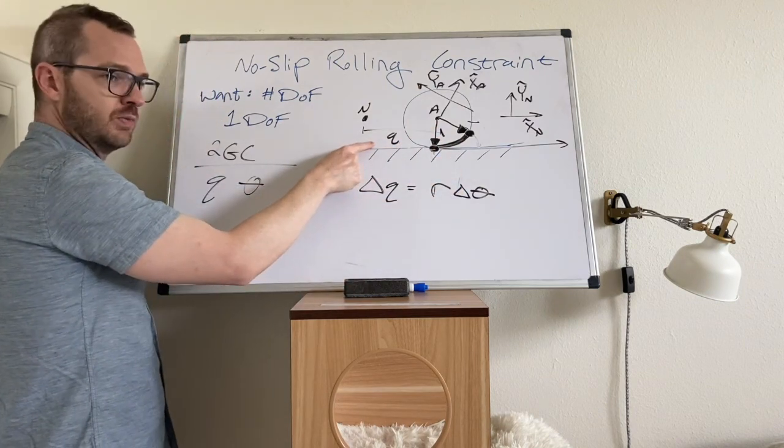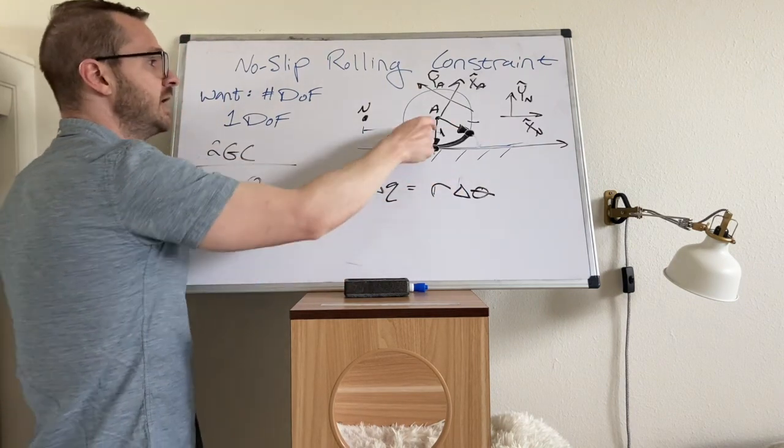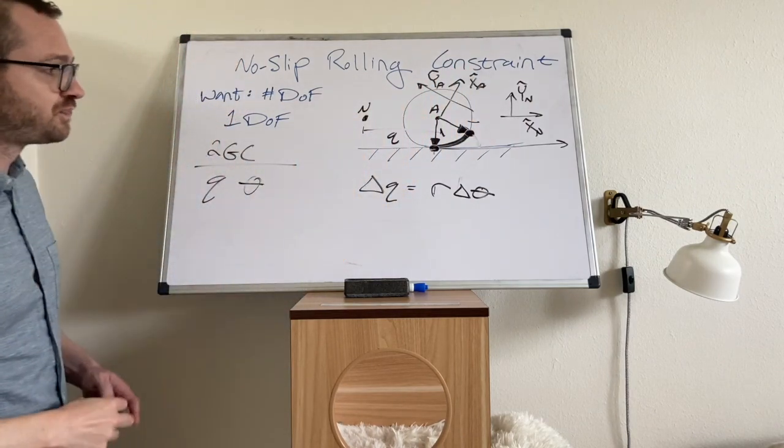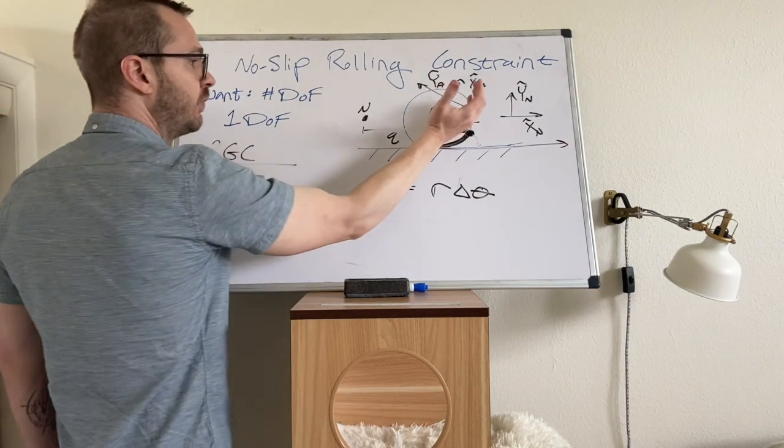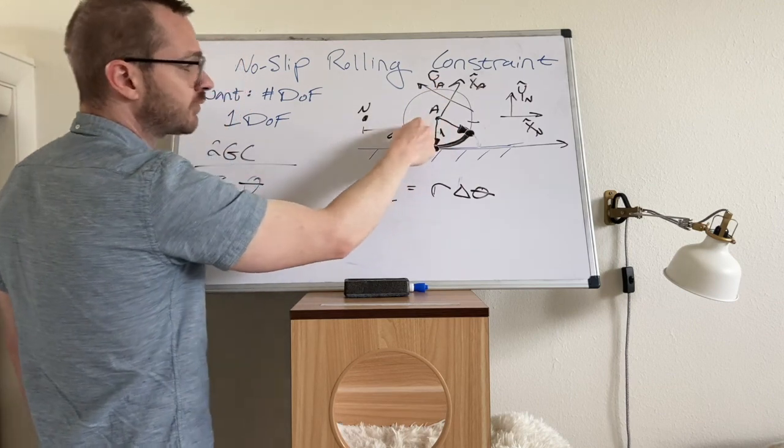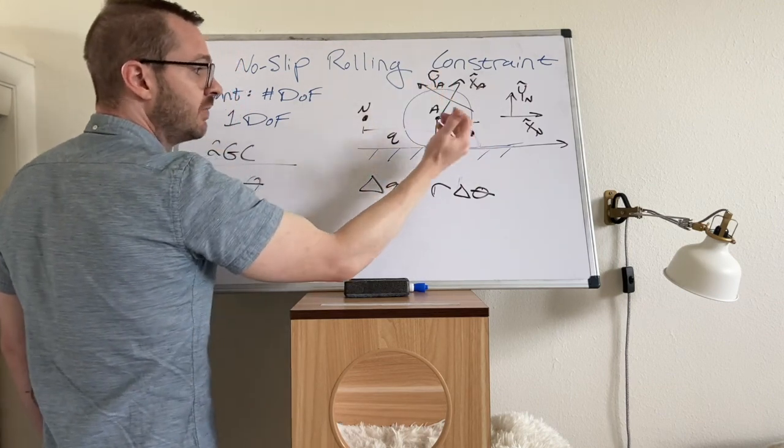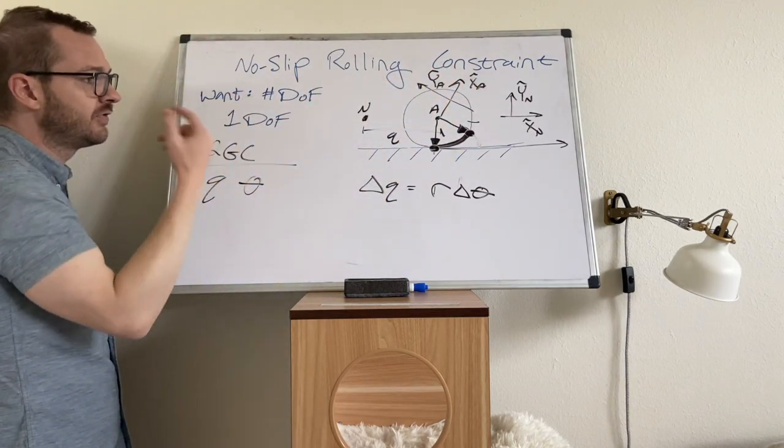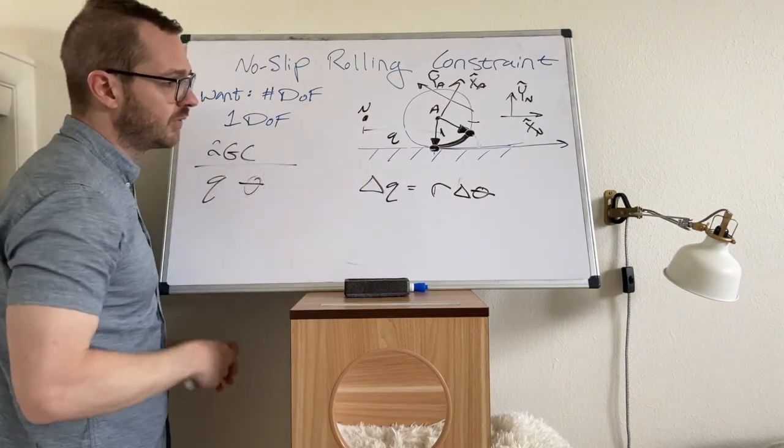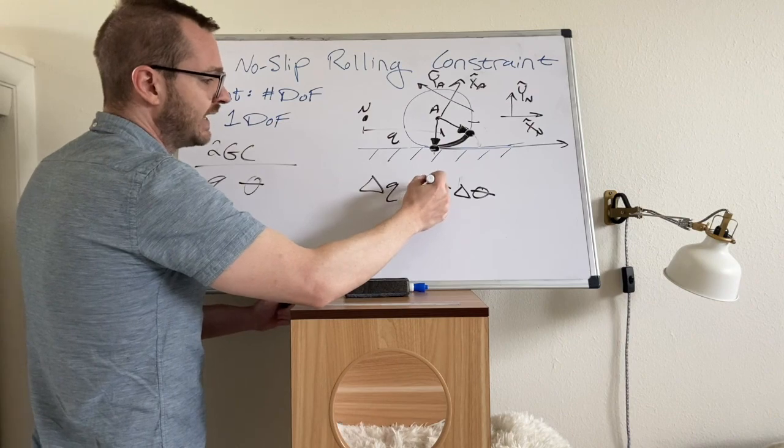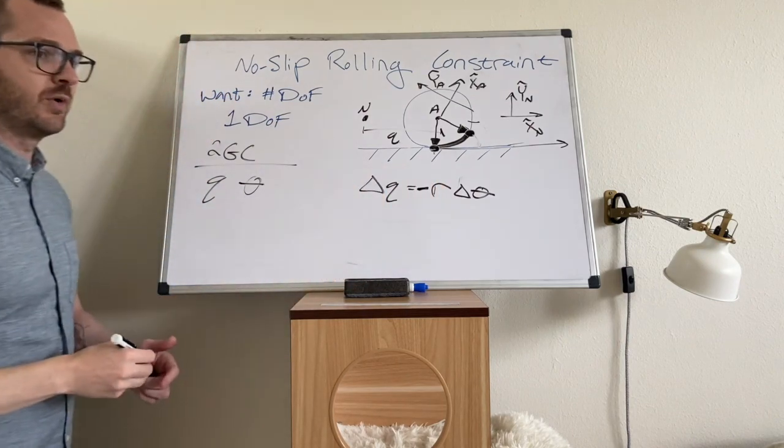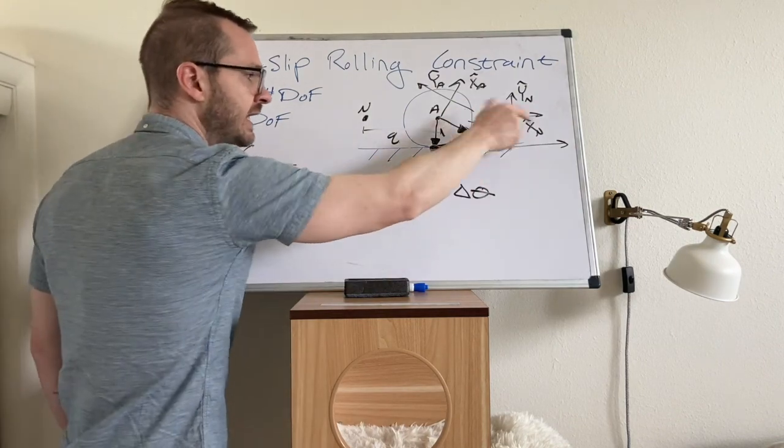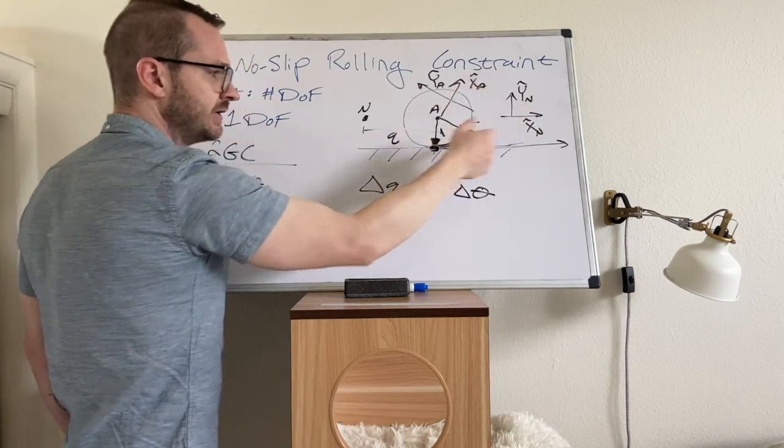Now, the way that we have defined q is that it's positive in the x hat N direction, and the way that we define theta is that it's a positive angle in a right-handed coordinate frame. If we took this disk and we rotated it with a positive angle, which way is the disk rolling? It's rotating positive, but in order to rotate positive, it would roll to the left, and that is a result of just how we selected our variables. So in this case, there needs to be a negative in the constraint equation, because a positive change in q would be this way, and that would require a negative change in theta. It would have to do a negative rotation to translate to the right.